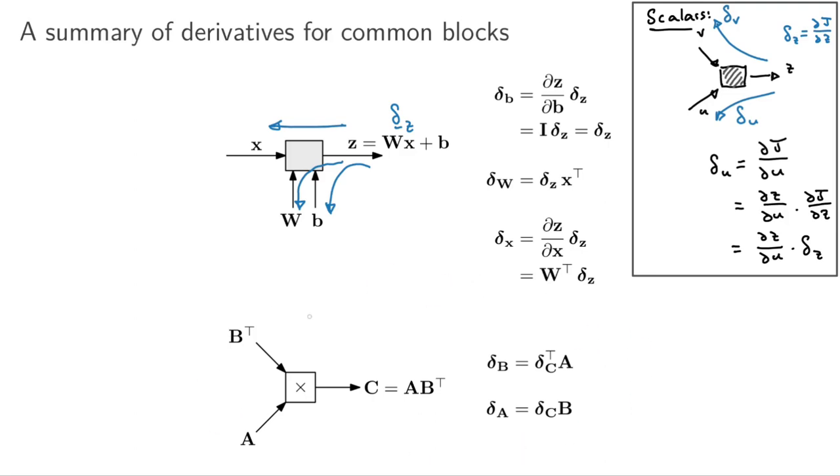This block here is even more general. This is an operation that takes in a matrix and another matrix and multiplies them together. If you go through the steps carefully and you want to prove this, then you can end up with these equations for the two matrices if you want to backprop through this operation.